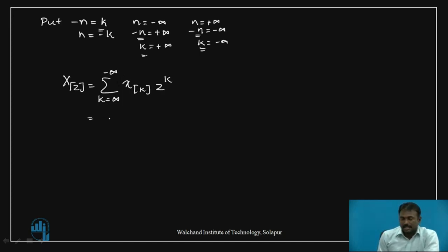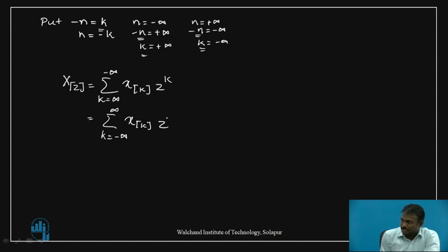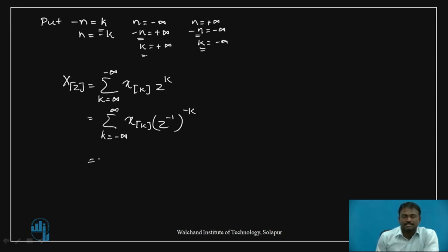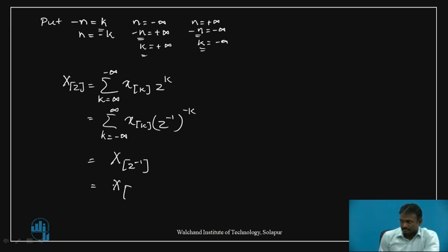The limits are interchanged here because the lower limit must be below the summation and the upper limit must be above. So summation becomes K equal to minus infinity to infinity, X of K into Z inverse to the power minus K. We know that summation K equal to minus infinity to infinity, X of K Z inverse to the power minus K is equal to X of Z inverse, also written as X of 1 by Z. Hence proved.